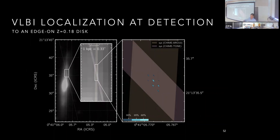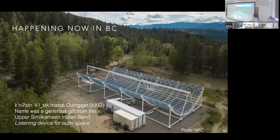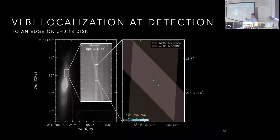To prototype these technologies, my lab in collaboration with colleagues at Dunlap and West Virginia University built arrays at ARO and Green Bank. This program achieved the first VLBI localization of a fast radio burst at the time of detection — previous VLBI localizations had only been done in follow-up of known repeating sources. The localization places the burst in the edge-on disk of a redshift-0.18 galaxy.